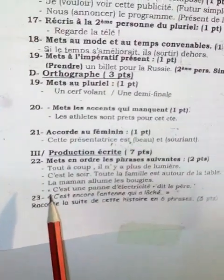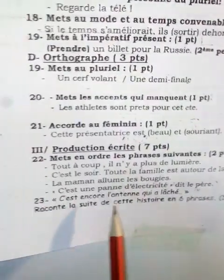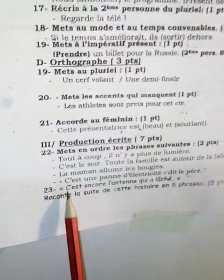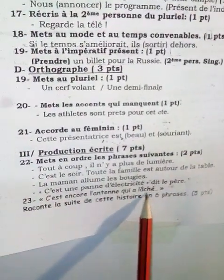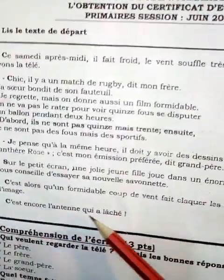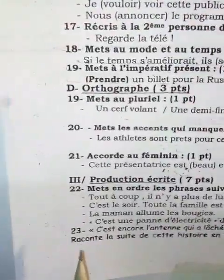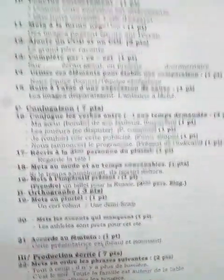Nous avons donc la consigne de la production à développer, à écrire. C'est quand on vous demande : c'est encore l'antenne qui a lâché — raconte la suite de cette histoire en six phrases. Nous avons vu qu'il y a une famille qui regarde la télé et tout à coup, il y a l'antenne qui a lâché. D'après toi, qu'est-ce que ces membres de la famille ont fait après que l'antenne a lâché ? Je vous souhaite bon courage. Revoyez cette vidéo pour bien répondre aux questions de compréhension, de langue et aussi à la production écrite.